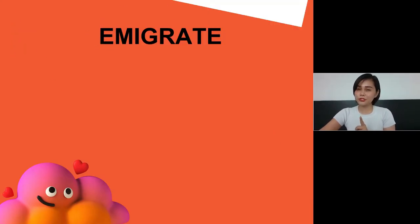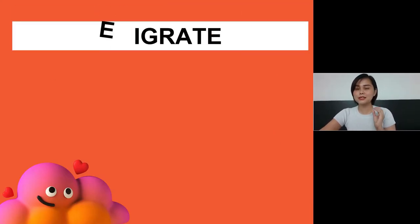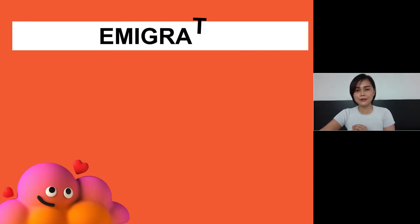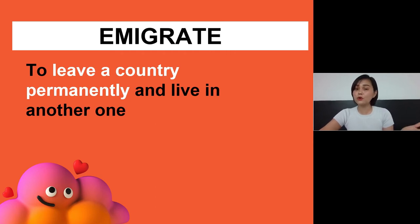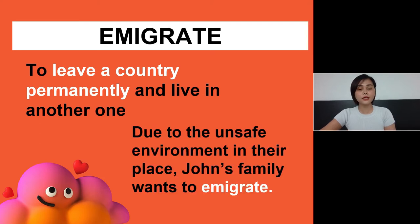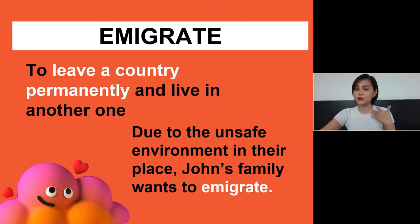First word: emigrate, which is spelled as E-M-I-G-R-A-T-E. This word means to leave a country permanently to live in another one. Pretty straightforward. If I try to use this in a sentence, I can say: due to the unsafe environment in their place, John's family wants to emigrate. It means they want to leave their own country and live in another one.